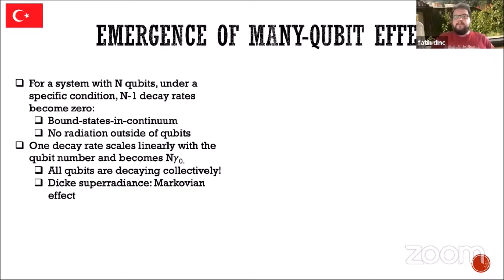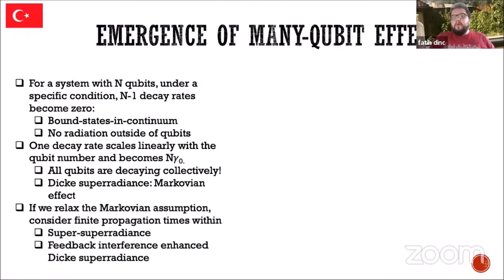The one remaining decay rate out of n becomes n·gamma. This means all n qubits come together and create one super qubit, which has a decay rate equal to all qubits summed. So it's a qubit that decays really fast — all qubits are decaying collectively, enhancing each other's decay. This is actually a Markovian effect called Dicke superradiance, known from the 1950s-1960s.